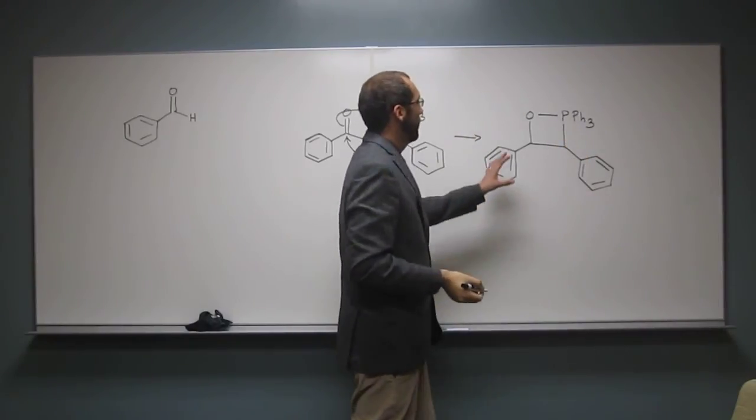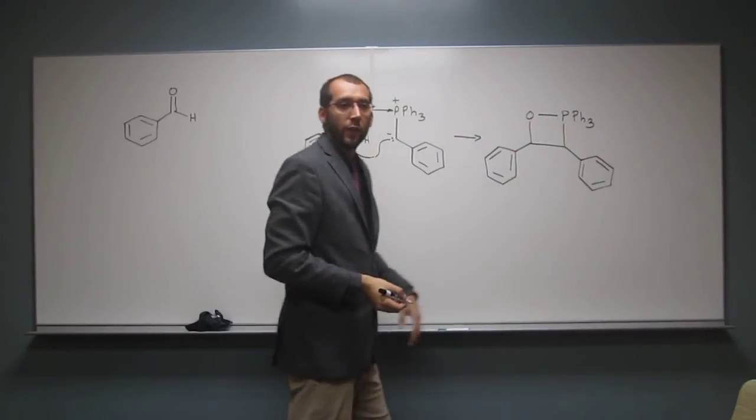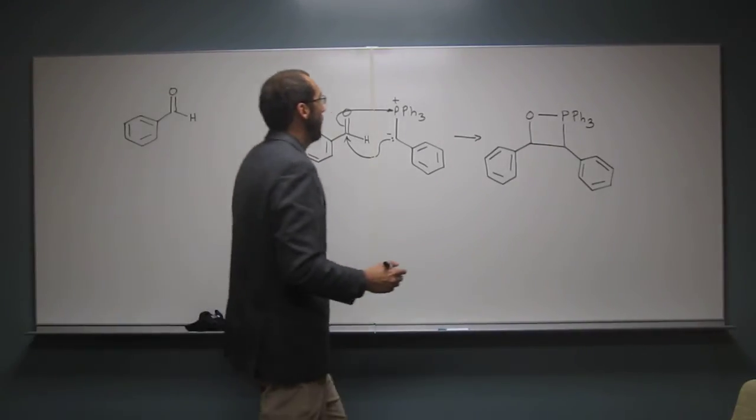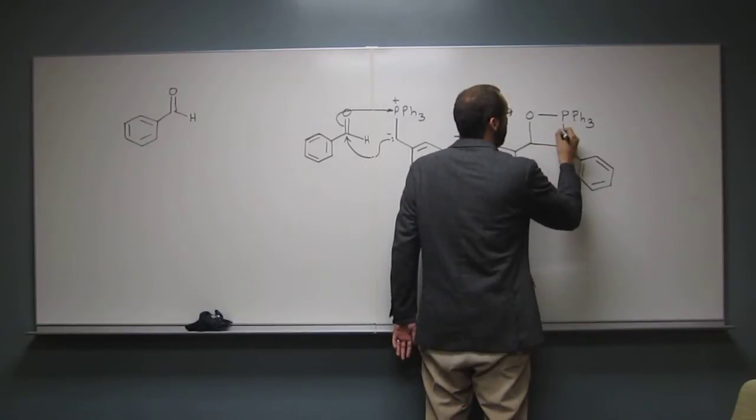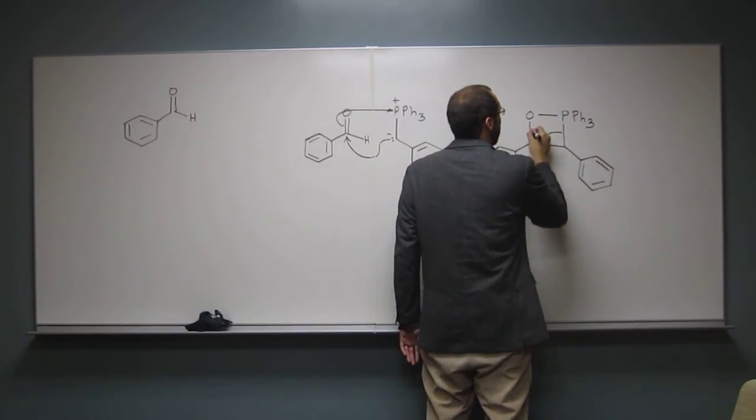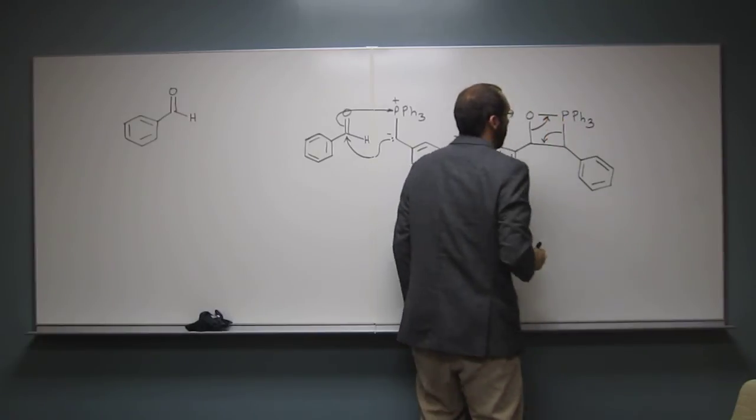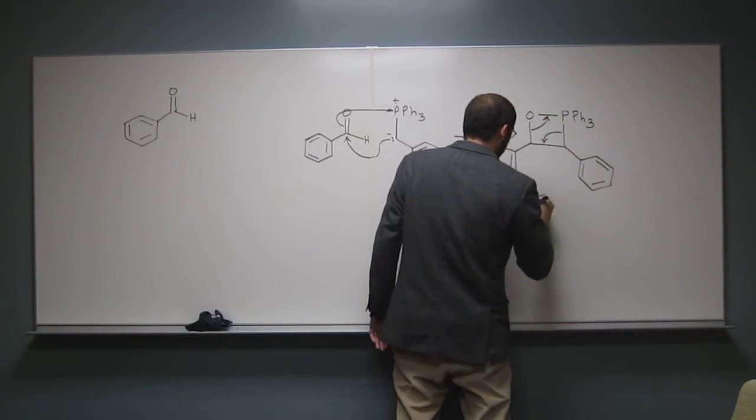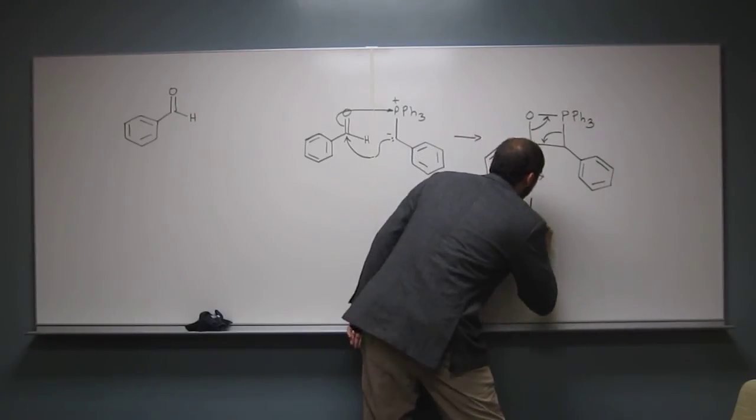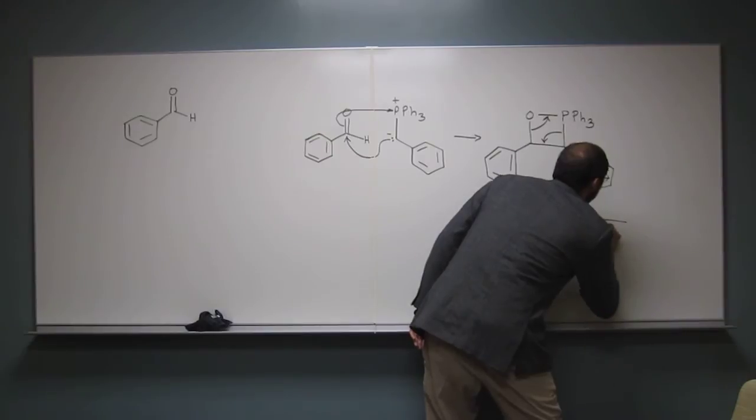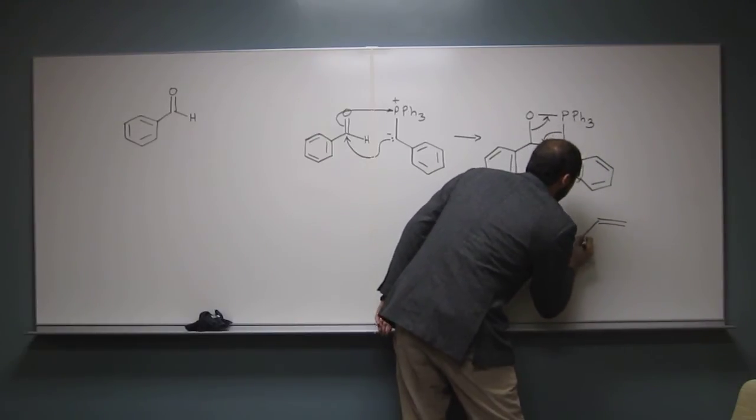And of course, this four-membered ring is very unstable. So it's going to break down quite readily. So what's going to happen is this bond is going to go there. This bond is going to go there. And then you're going to have to get all of the byproduct out. It's not the easiest thing. But anyways, you'll see that when you do the reaction today.